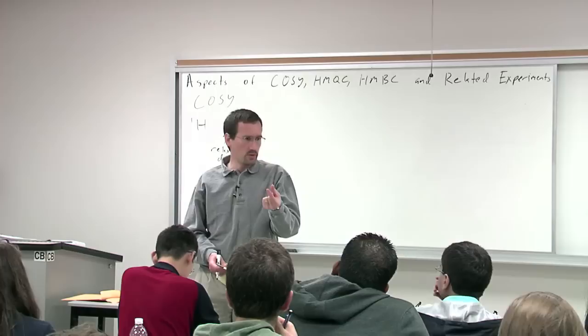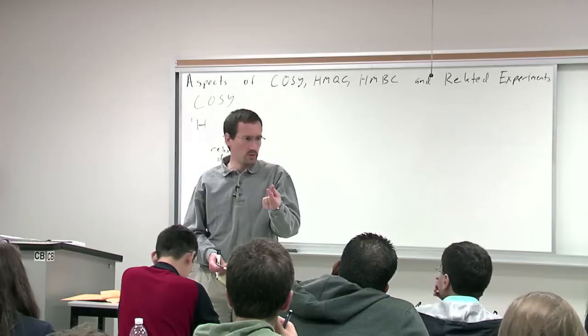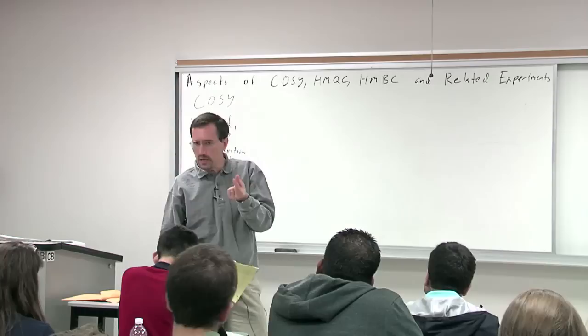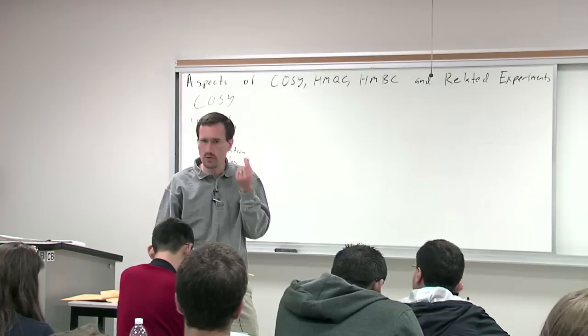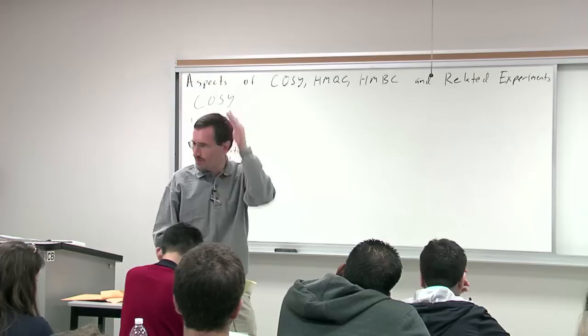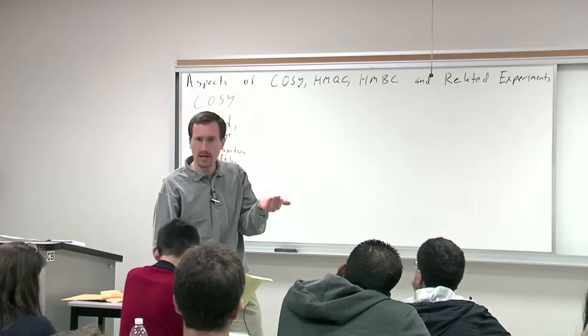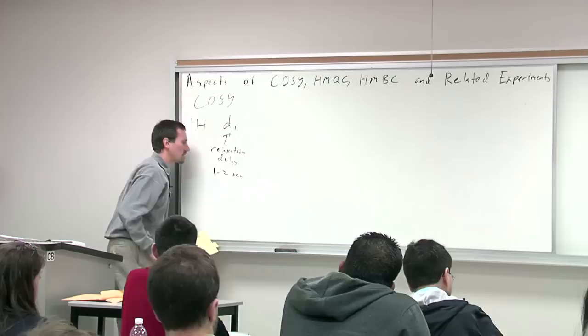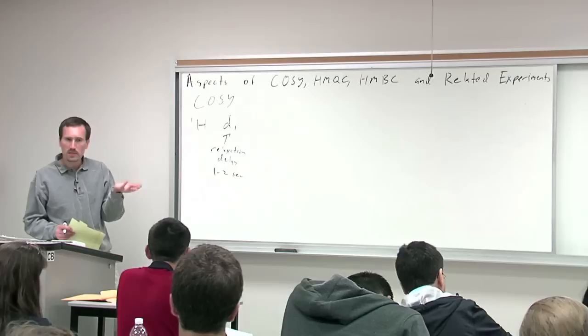In a 2D experiment, there's an inverse relationship between the amount of time you're collecting data and your digital resolution — that's the uncertainty principle that gives you how accurately you can know your peak positions. In a 2D experiment you don't generally need super high digital resolution; acquisition times are typically shorter, like 0.17 seconds for a typical COSY experiment. So you don't want to be pulsing every 0.17 seconds because none of your magnetization will return to the Z axis.